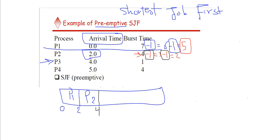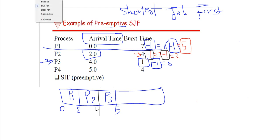Operation P3 has only one second of burst time. We subtract one and it becomes zero. There are no other values equal to zero to compare, so P3 simply completes. We write down P3, and the finish time is 5.